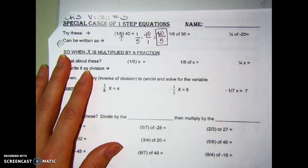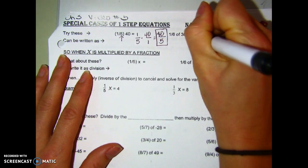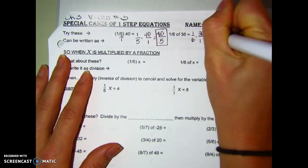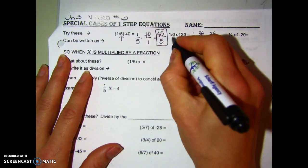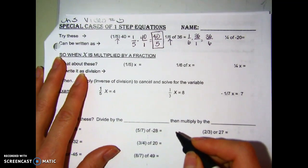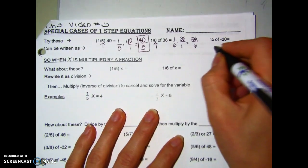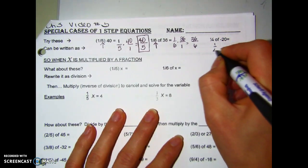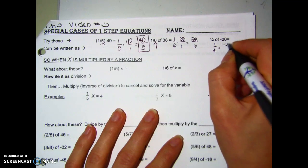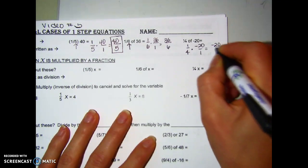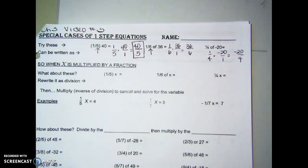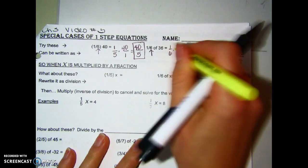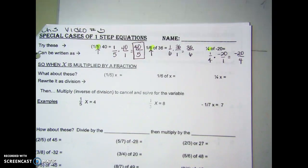Let's do one-sixth of 36. One-sixth times 36 gives me 36 over 6 — I'm really just taking 36 and dividing by that denominator. And one-fourth of negative 20: one-fourth times negative 20 just gives me negative 20 divided by 4. So there's a shortcut — when you multiply by fractions, you're actually just dividing by that denominator each time. We're going to use that in this section.